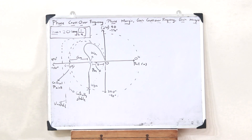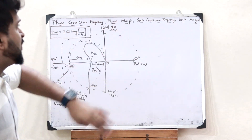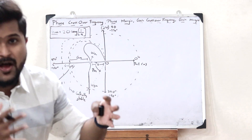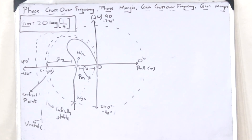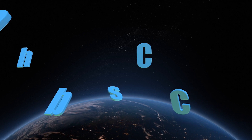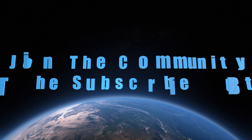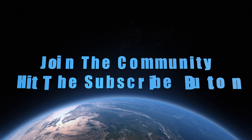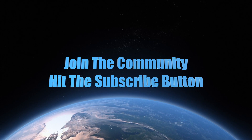This is simply what you refer to as the terms phase crossover frequency, phase margin, gain crossover frequency, and gain margin of a particular polar plot. I hope you guys now have a clear understanding of these terms. If you found this video informative, please hit the like button and join this community by hitting the subscribe button. We'll be discussing further topics in the upcoming videos. So stay tuned, stay subscribed. Until next time, I'll see you guys in the next video. Thank you.